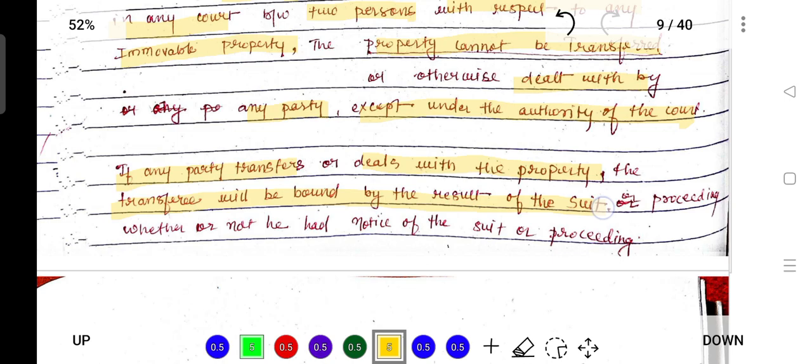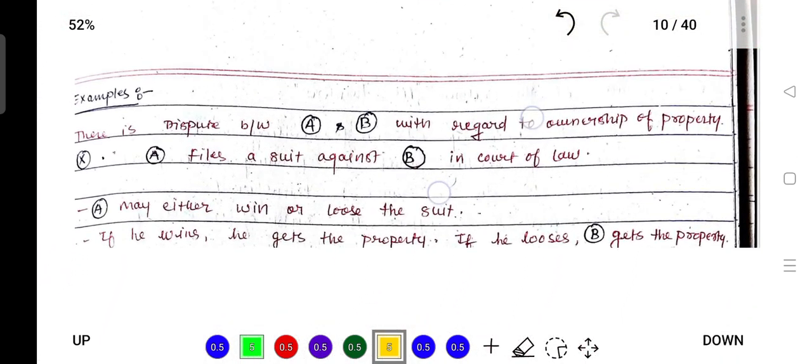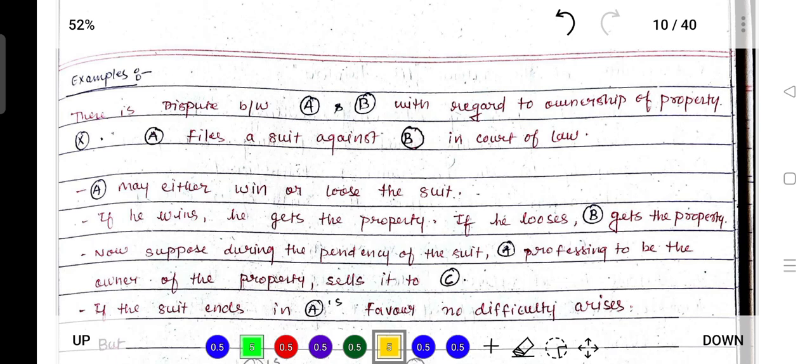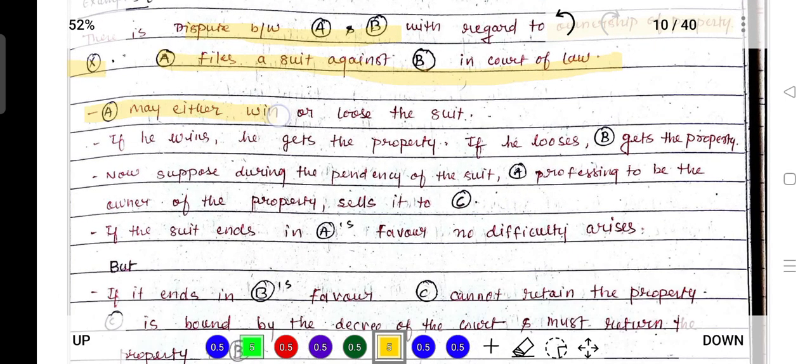Whether or not the transferee had notice of the suit or proceeding, they are bound. For example, there is a dispute between A and B with regard to ownership of property X. A files a suit against B in a court of law. A may either win or lose the suit.